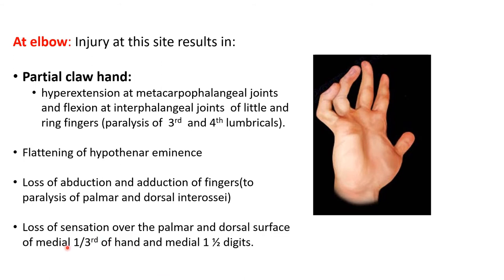There will also be sensory loss. Because the injury is at the elbow, the palmar cutaneous branch and the dorsal cutaneous branch are also affected. So sensory loss will be over the medial one-third of the palmar surface, the medial one-third of the dorsal surface of the hand, plus the palmar and dorsal surface of the medial one and a half digits.